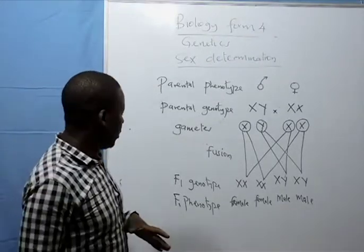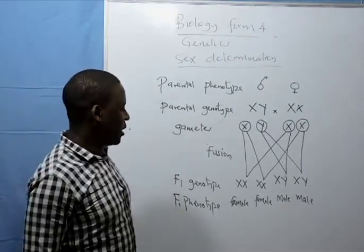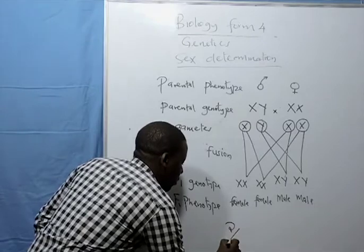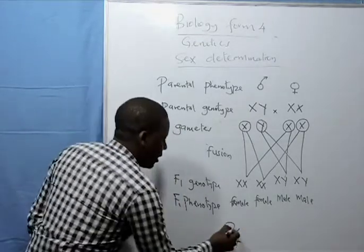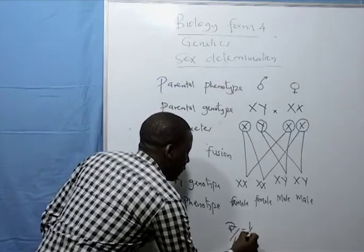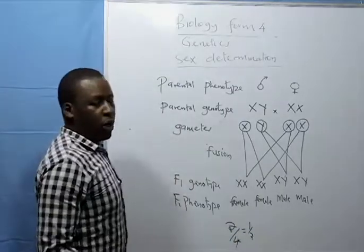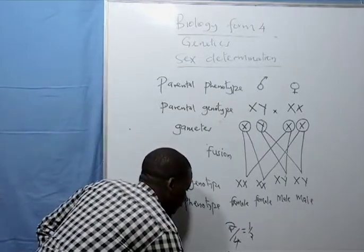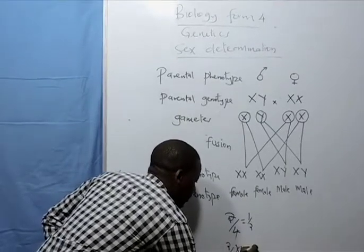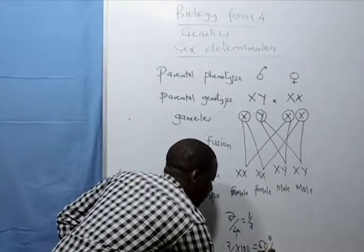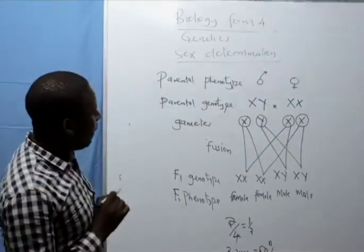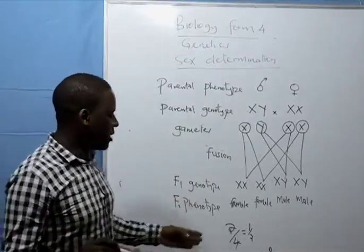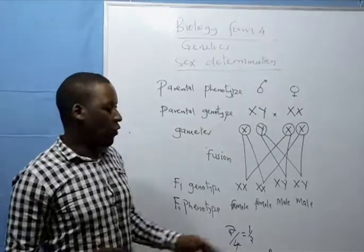So therefore, the probability of a female child in any family is two females out of a possible four children. You do that, you get a half. You can also express probability in terms of percentages. Two out of four times one hundred gives you 50%. So in a family, the probability of a male child and a female child is equal. That is, both have a 50% chance of being born.